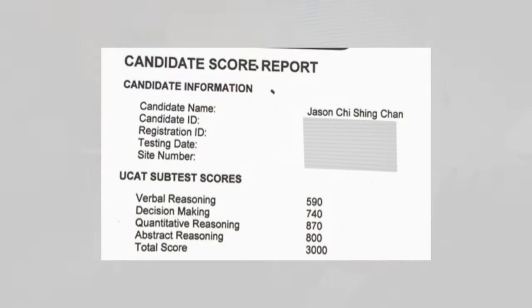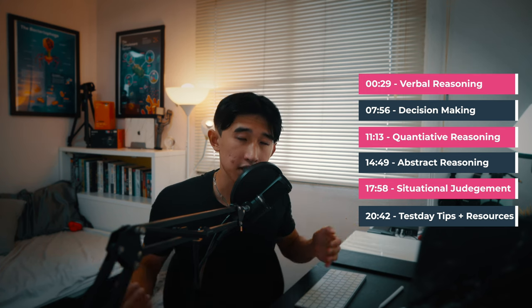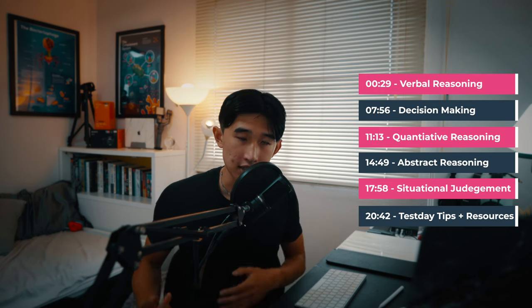This video is about how I scored 3000 on my UCAT, which is one of the UK's most competitive, time-pressured, hardest medical school entrance exams. We'll first go through each section chronologically: VR (verbal reasoning), DM (decision-making), QR (quantitative reasoning), AR (abstract reasoning), as well as SJT (situational judgment). And we'll finally end off the video with general tips on the test day, as well as resources for the UCAT.